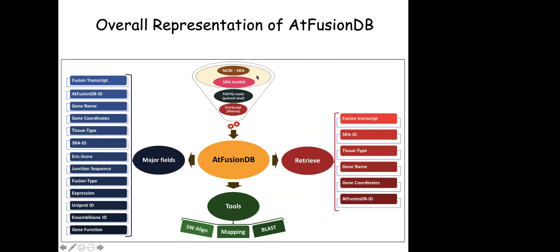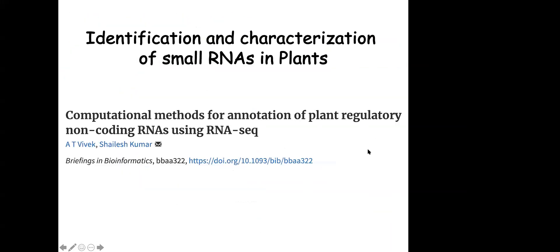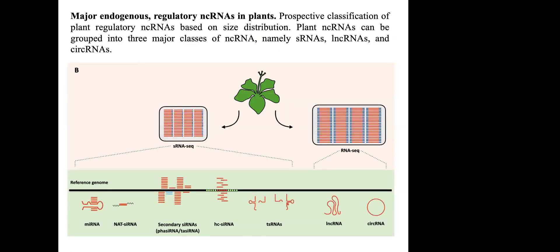We took several thousand Arabidopsis thaliana paired-end RNA-seq datasets, used the ArieScript Plant tool, identified fusions, and correlated them with phenotypic data — tissue-wise and stress-wise, including leaf, root, and shoot. We developed the ATFusion database, which includes NCBI SRA data, different fusion detection tools, and major features such as expression, fusion type, and UniProt ID. We also wrote a review on identification and characterization of small RNAs in plants, published in Briefings in Bioinformatics.